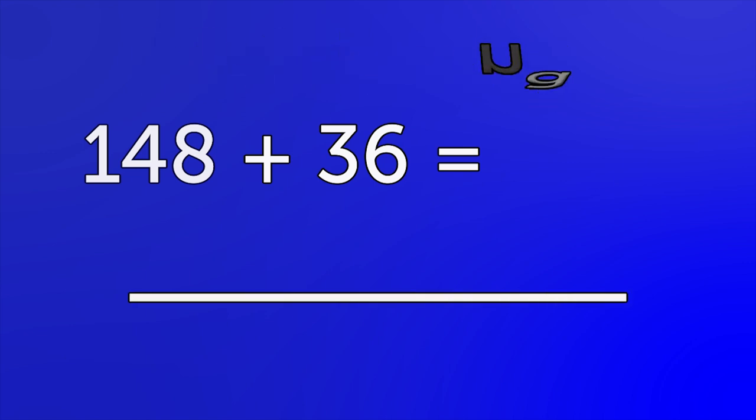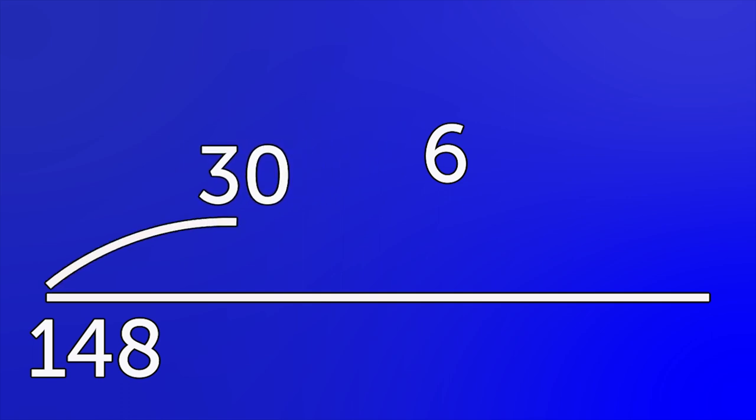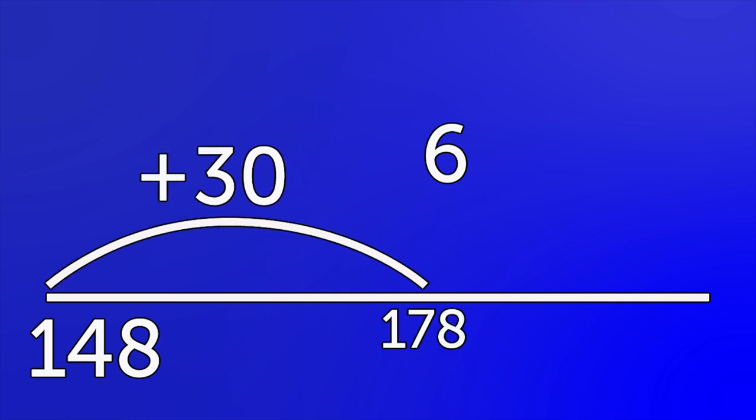In this case, one hundred and forty-eight. Then partition the smaller number into tens and ones: thirty and six. This makes the numbers easier to add. First, add the tens: one hundred and forty-eight add thirty.